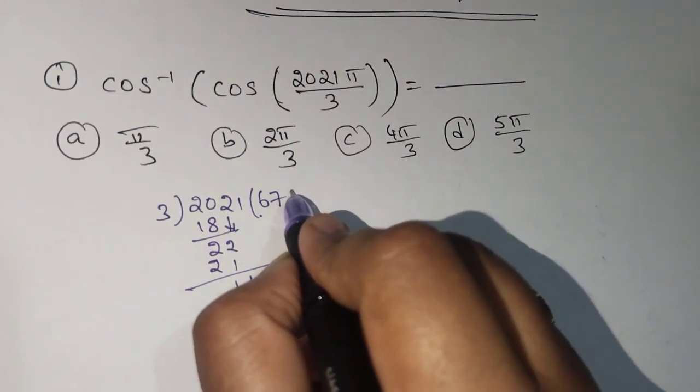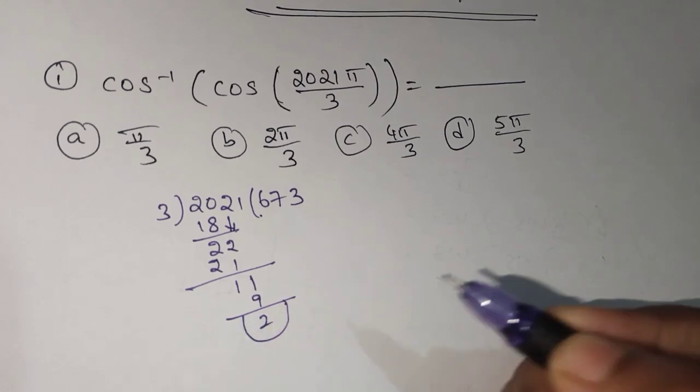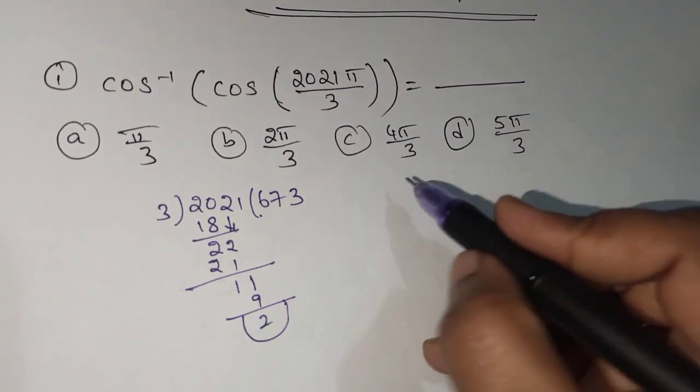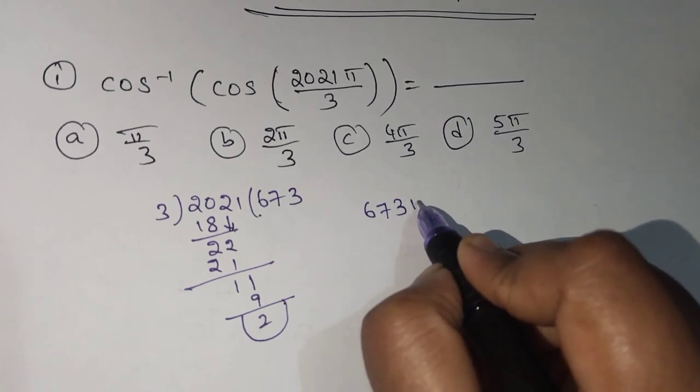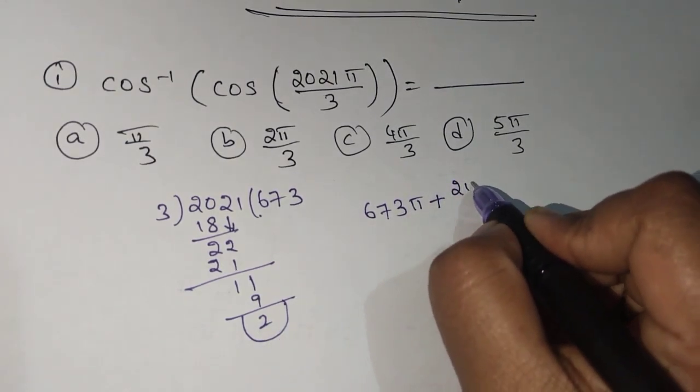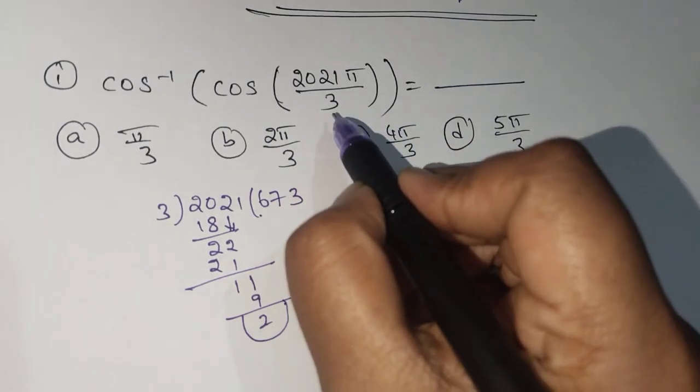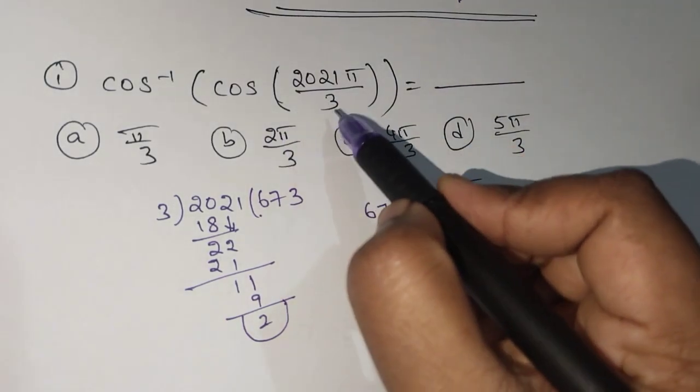Here 3 into 9 is 27, so remainder is 2. We can write this as 673 into π plus the remainder 2 into π, divided by the denominator 3. I split it like this.